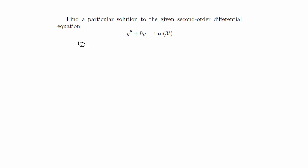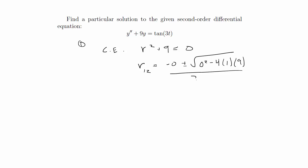To do that we write out the characteristic equation: r squared plus 9 equals 0. For the homogeneous equation, you pretend the right hand side equals 0, and then plug in — double prime becomes r squared. Using the quadratic formula, that gives us 0 plus or minus the square root of negative 36 over 2, which simplifies to 0 plus or minus 3i.